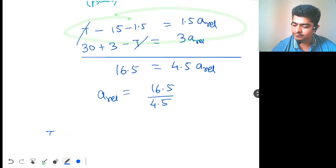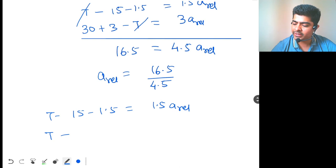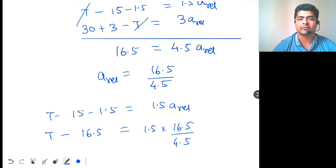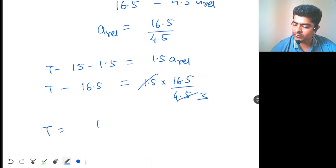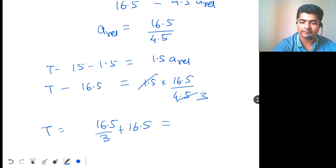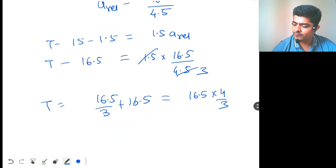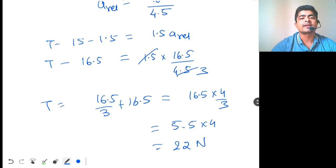So, t minus 15 minus 1.5 equal to 1.5 a relative. So, t minus 16.5 is equal to 1.5 into 16.5 by 4.5. So, this will be 3 times. So, we get t is equal to 16.5 by 3 plus 16.5. So, this will be, I can write down 16.5 into 4 by 3. So, 6 plus 1, 7 plus 5, 12. So, 3 times 5 is 15. 5.5 into 4. This is 22 Newton. Tension is 22 Newton.